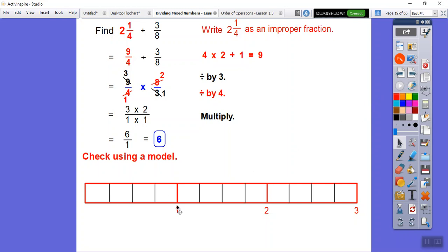Here's one, here's two, and here's 2 and a fourth. So this guy is my 2 and a fourth. Now, since we're dividing by 3 eighths, we're checking to see if we can get it six times. So I'm going to cut these fourths up into eighths. If I cut all these squares in half, then they become eighths. Half of a fourth is an eighth.